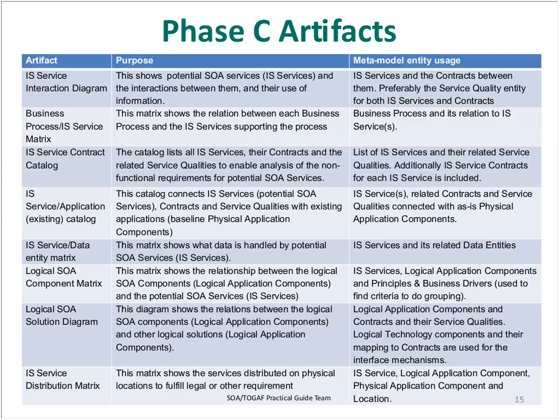In phase C artifacts, we have things like an IS service integration diagram, which is new; a business process IS service matrix, which is not new. We have a mixture of some new and some existing artifacts called out by TOGAF, but they're targeted for service orientation specifically for SOA. You also have a logical SOA solution diagram and an IS service distribution matrix.